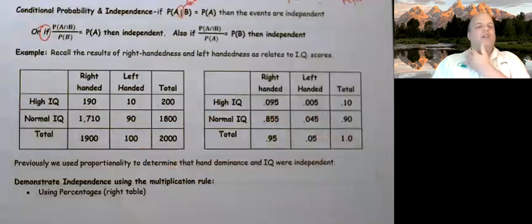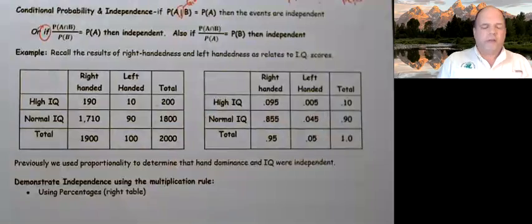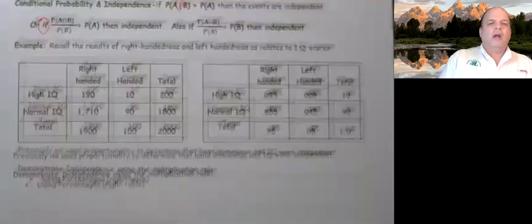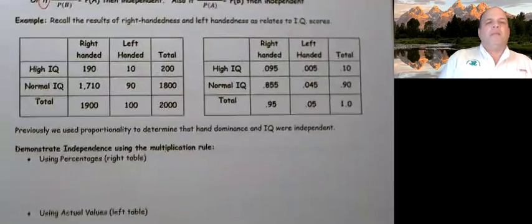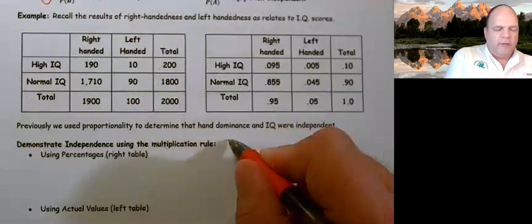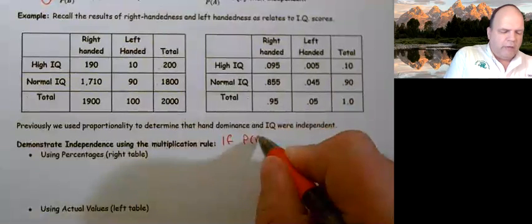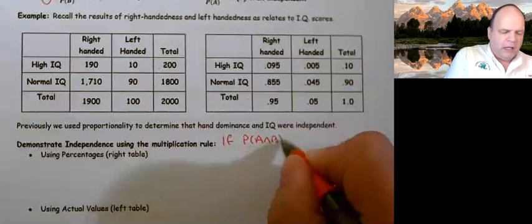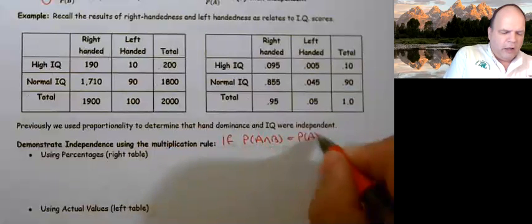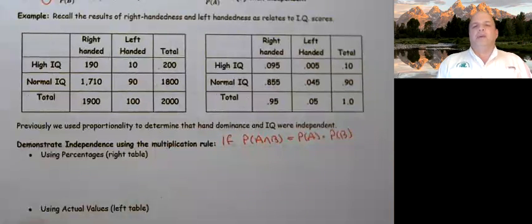We're going to talk about determining independence using the multiplication rule. Please remember: if two events are independent, then the probability of A and B equals the probability of A times the probability of B. This is a big 'if' — if that holds, then the events are independent.